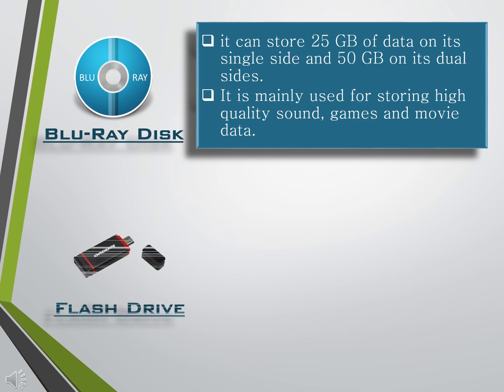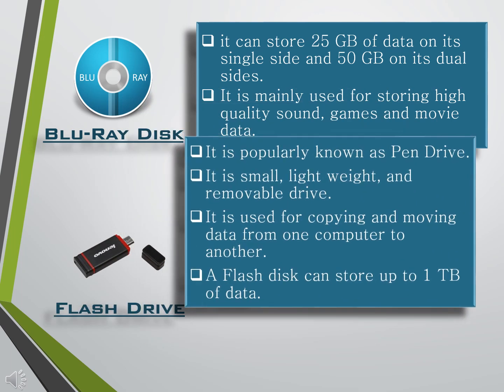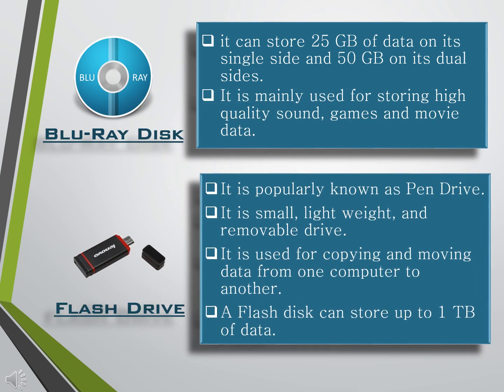Flash Drive, also known as a pen drive, is a small, lightweight, and removable drive. It is used for copying and moving data from one computer to another. It can store up to 1 TB of data. Flash drives are faster in accessing data and are more reliable.